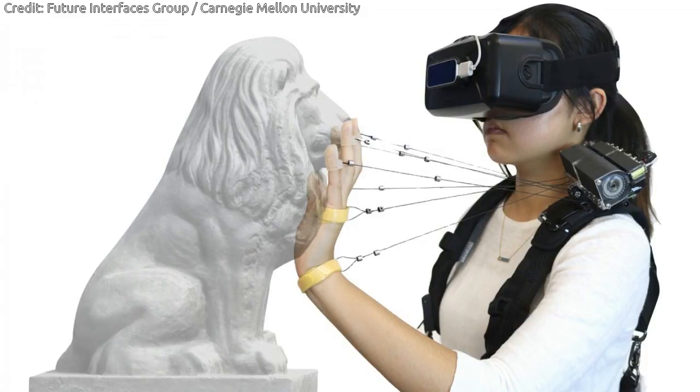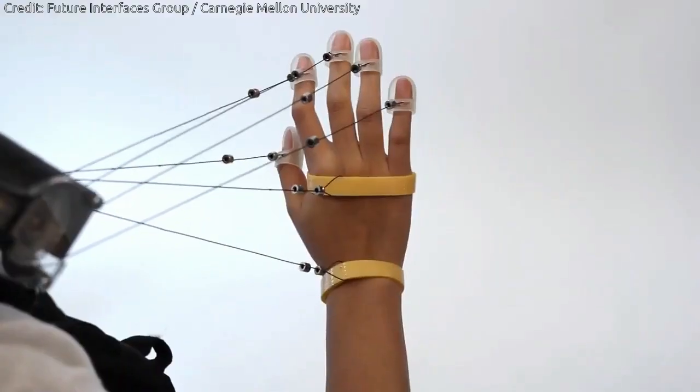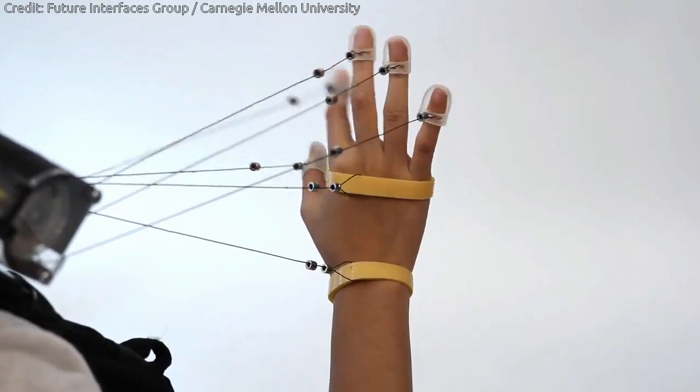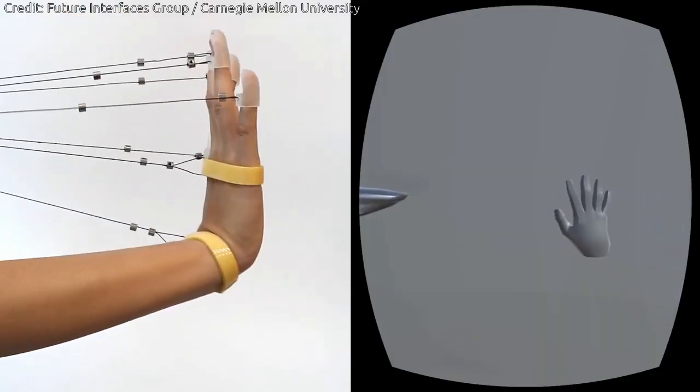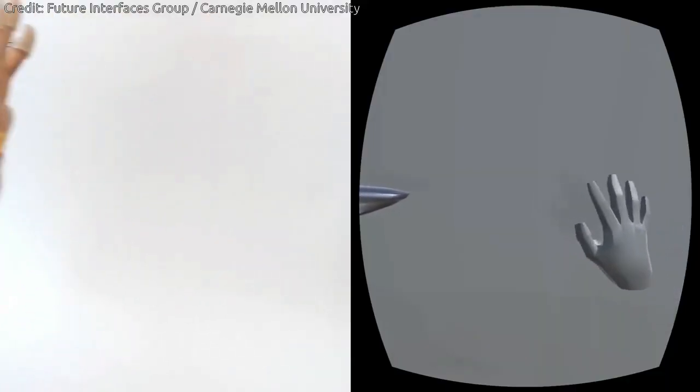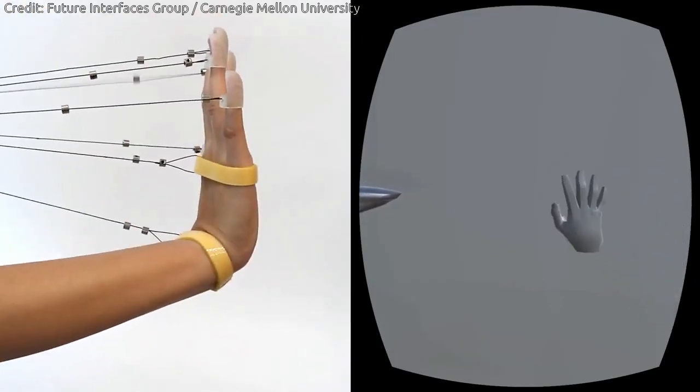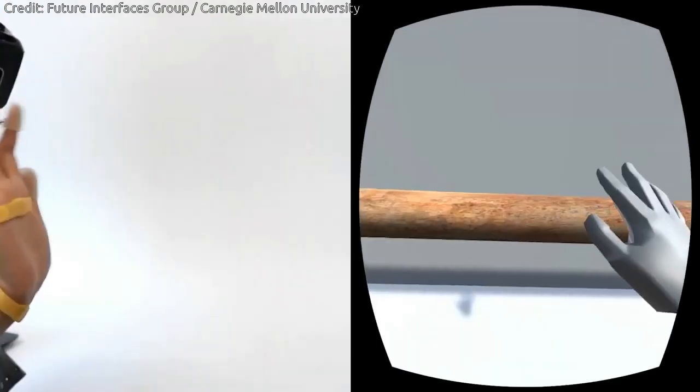A new device developed at Carnegie Mellon University, however, uses multiple strings attached to the hand and fingers to simulate the feel of obstacles and heavy objects. By locking the strings when the user's hand is near a virtual wall, the device simulates the sense of touching the wall.